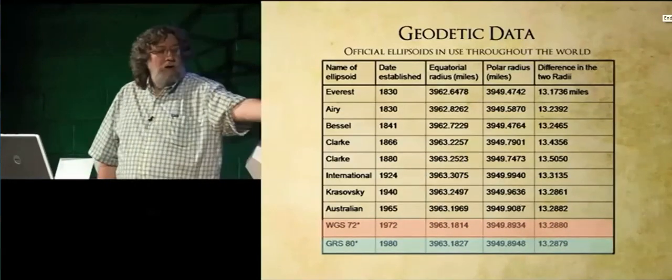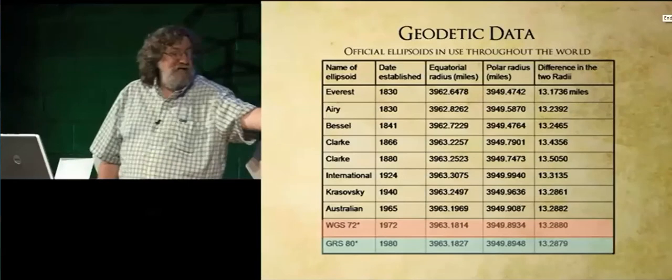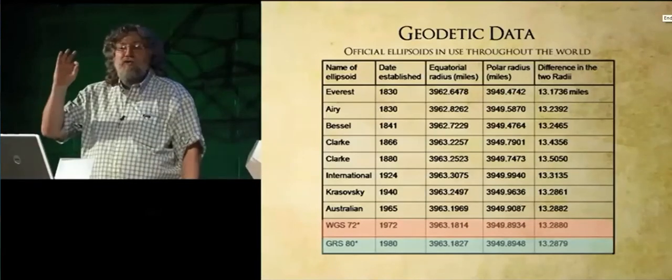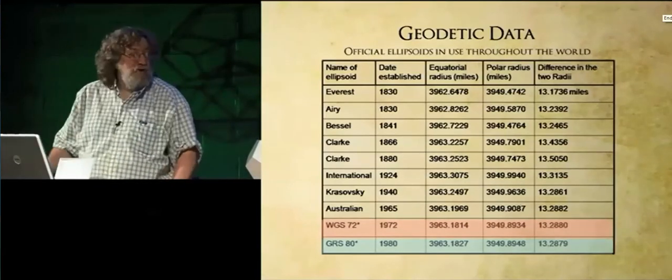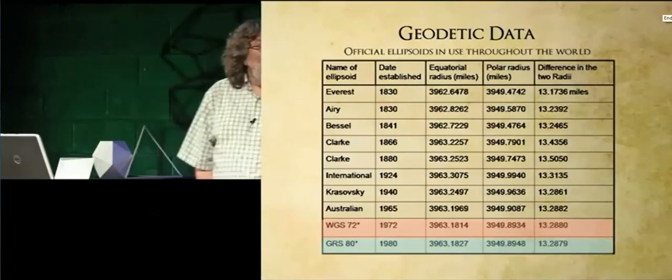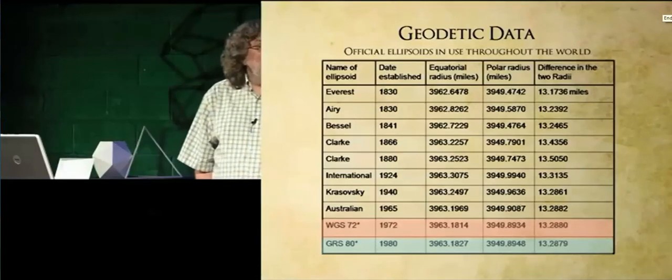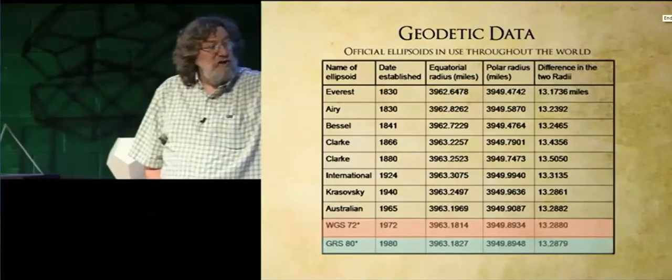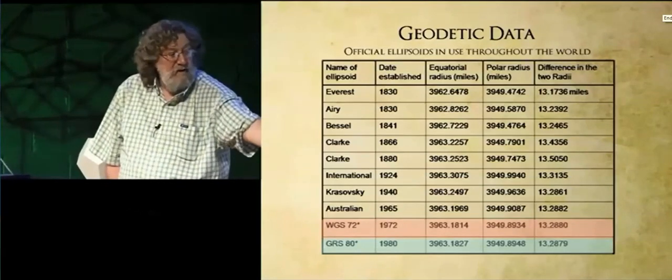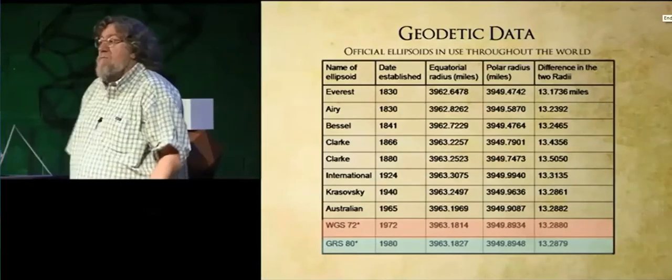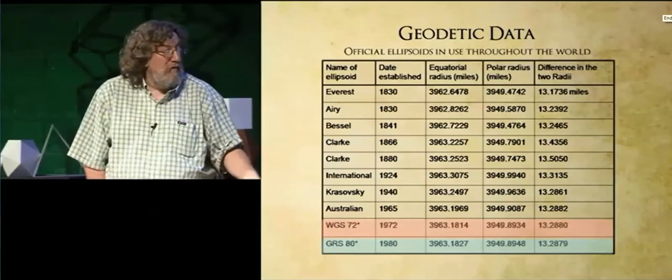As you're coming down through here, we get to these last two. World Grid System 72 and Geodetic Reference System 80 are the two that were determined by satellite measurements. We've got a polar radius in miles and an equatorial radius in miles, and then we have the difference in the two radii right here. We assume that as we've come through, we're progressively getting better and better at measuring the size and shape of the Earth.